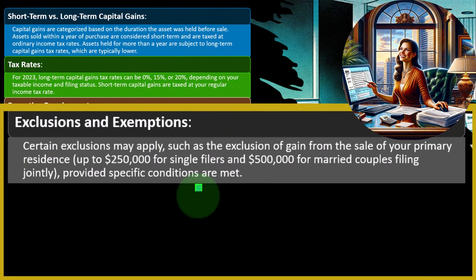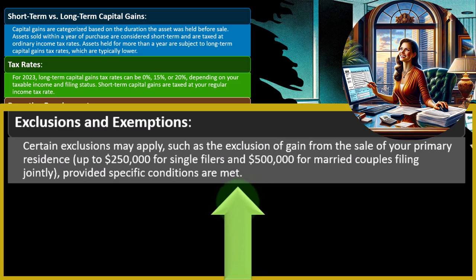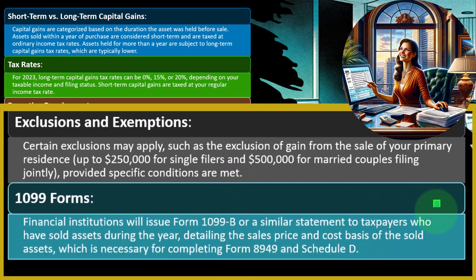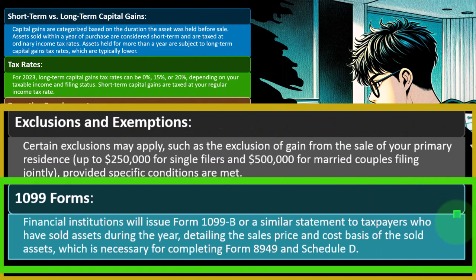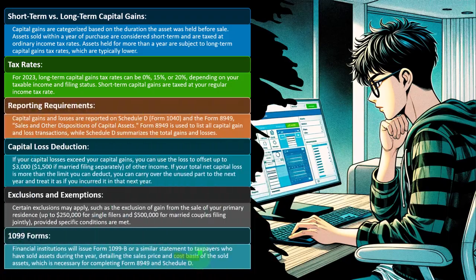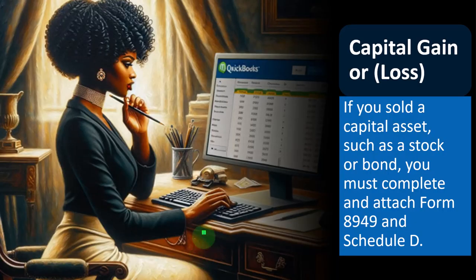Up to $250,000 for single filers and $500,000 for married couples filing jointly can be excluded, providing certain conditions are met — we'll talk more about that later. The sales price is usually pretty straightforward; the cost basis can sometimes be more complex, though they're getting better at that.